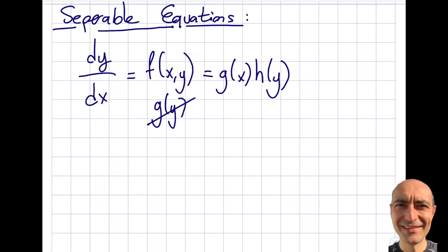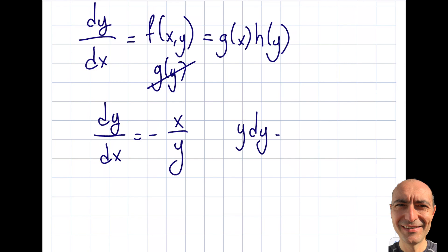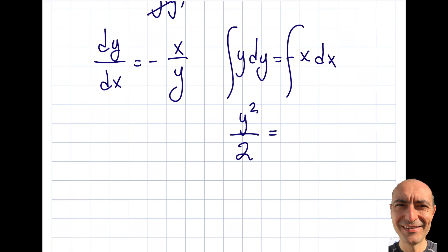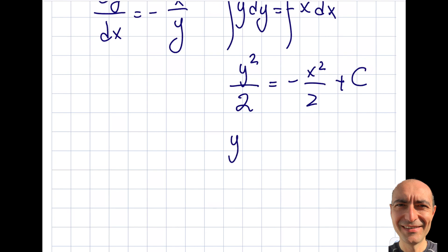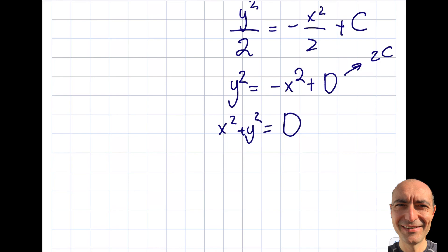That's the core idea — it's not very complicated. In the first module we discussed explicit versus implicit solutions, and I had a simple example there. If I move y to one side and dx to the other and integrate both sides, I get y dy = −x dx. Taking integrals: y²/2 = −x²/2 + c. Multiplying both sides by 2 gives y² = −x² + d, so x² + y² = d. That's an implicit solution.